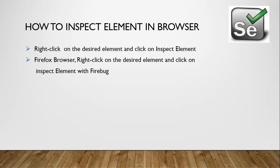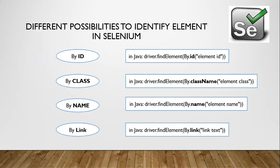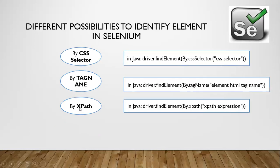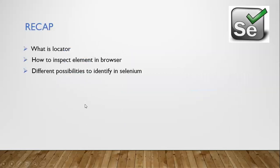Now we've seen how to inspect elements in Firefox. Let's look at the different possibilities we have in Selenium to identify elements. The first one is by ID. If you want to locate a web element by its ID, you write: driver.findElement(By.id(...)) and pass the value of the ID. Other possibilities include: class name, name, link text, partial link text, CSS selector, tag name, and XPath.